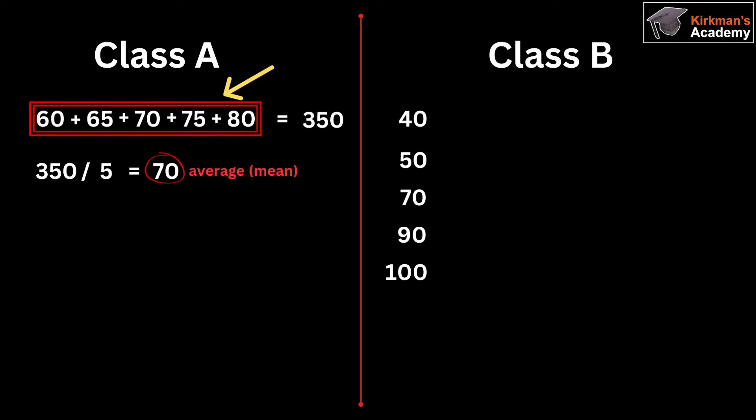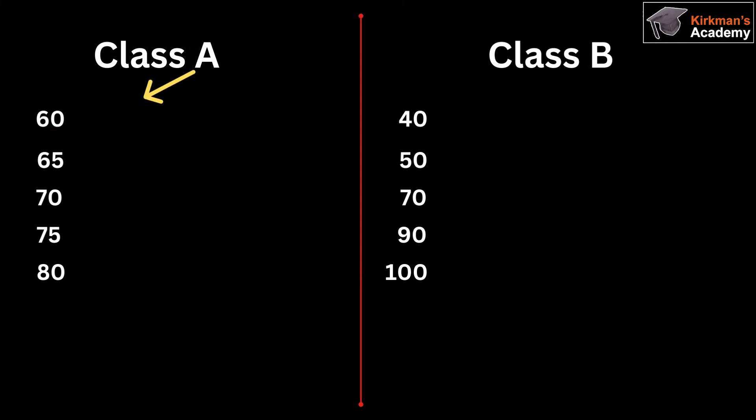And so the next thing to do is subtract this mean of 70 from each of the original test results. So 60 minus 70, 65 minus 70, 70 minus 70, 75 minus 70, and 80 minus 70.